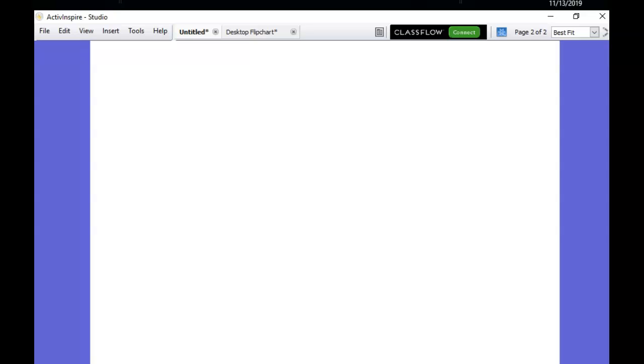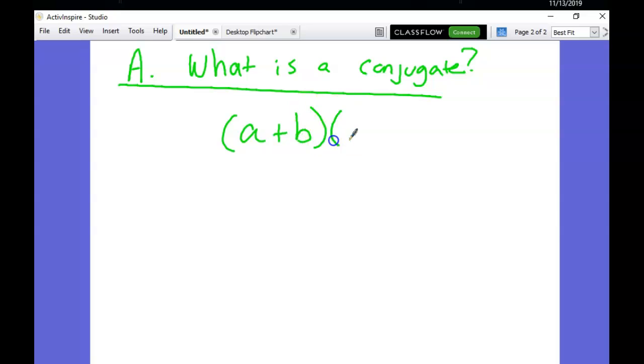So first of all, what is a conjugate? A conjugate in mathematics, we've already seen it, is this: it's when you have two binomials where one's being plus and one has a minus.